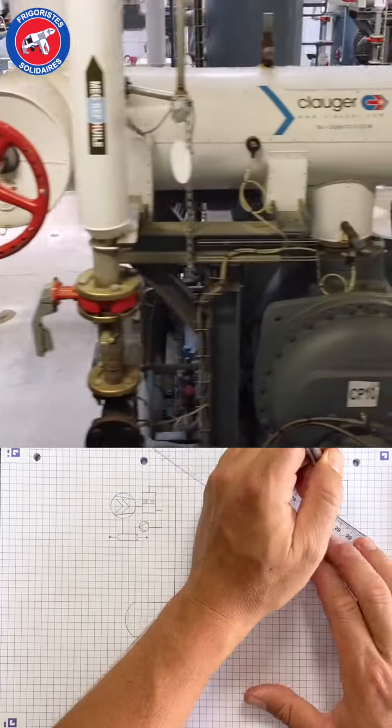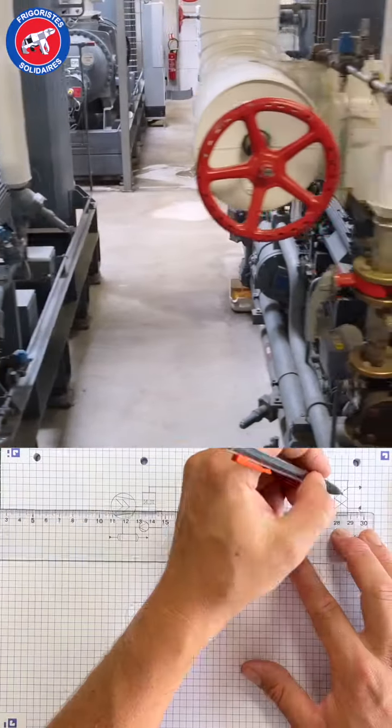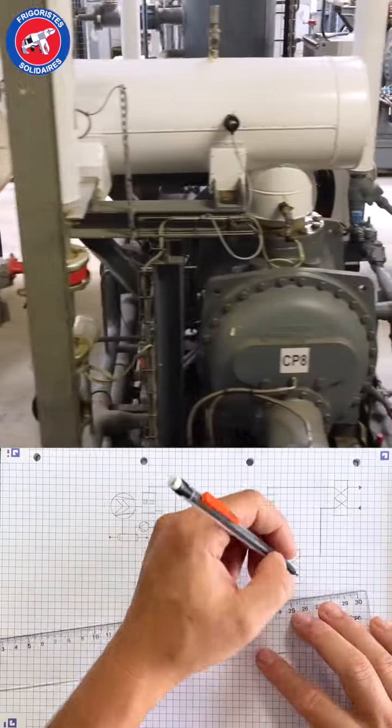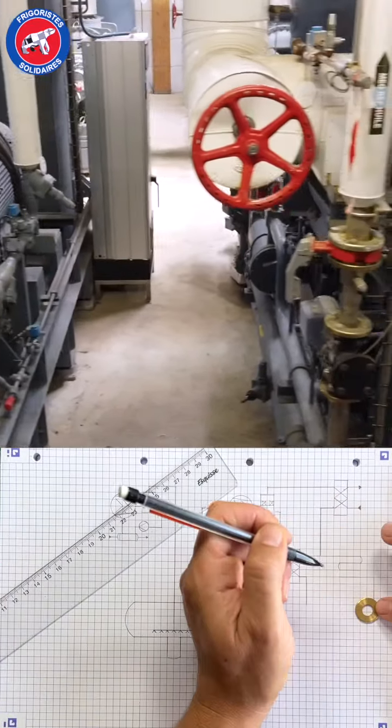Five other screw compressors maintain this liquid separator at minus 10 degrees C by sucking out the 12 tons of vapor into the high pressure section.